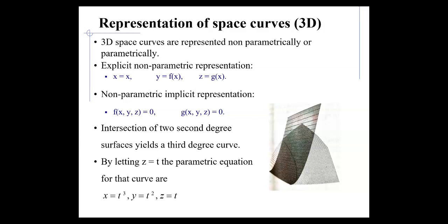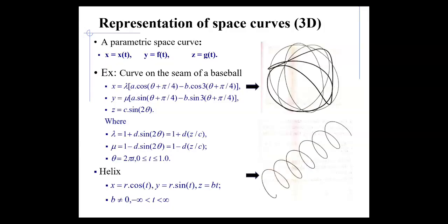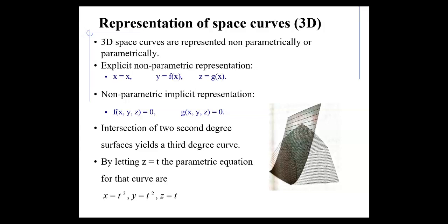We have seen the representation of space curves in 2D. Now we are going to add one third coordinate system — the Z coordinate system. Similarly, 3D space curves are represented non-parametrically or parametrically. In explicit non-parametric representation, we use x, y, and z coordinates together.